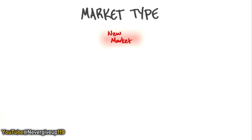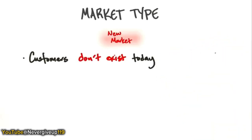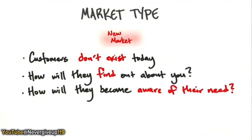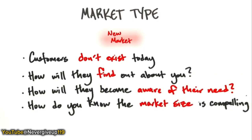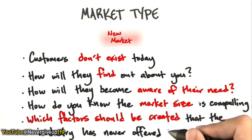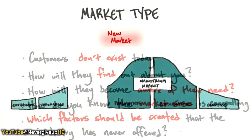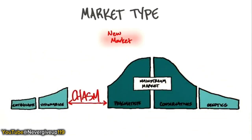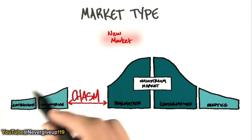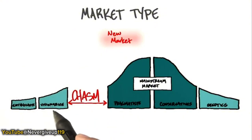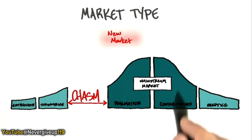The next market type is a new market. Customers don't exist today. The real questions are: if they don't exist, how will anybody find out about you, and how will they even become aware they need to be in this new market? And how do you know the market size of something that doesn't even exist? The market size is zero. You can sell to the early evangelists and early adopters — that's nice — but you'll have a small business until you figure out how to get the masses to adopt.